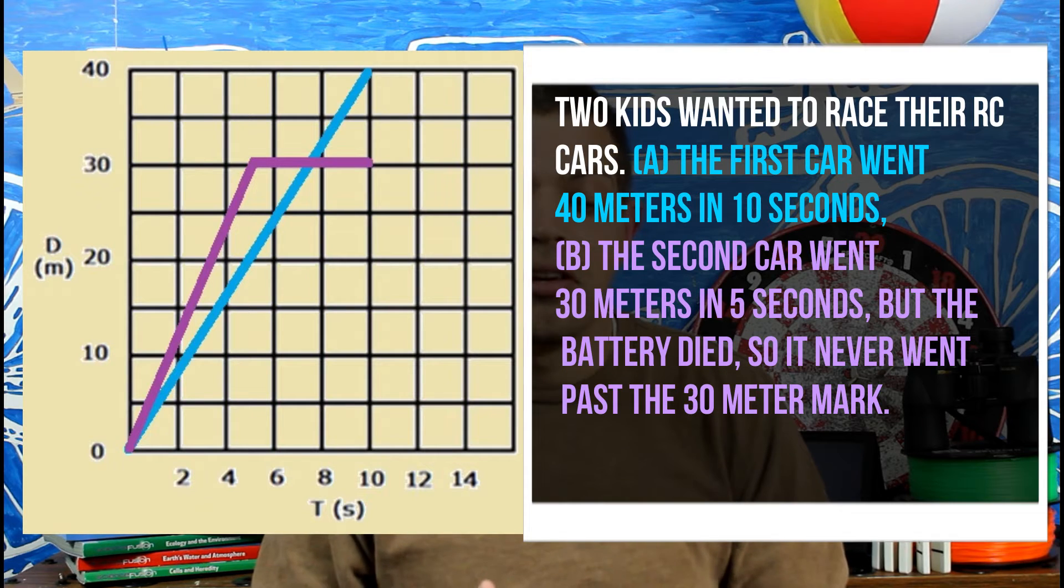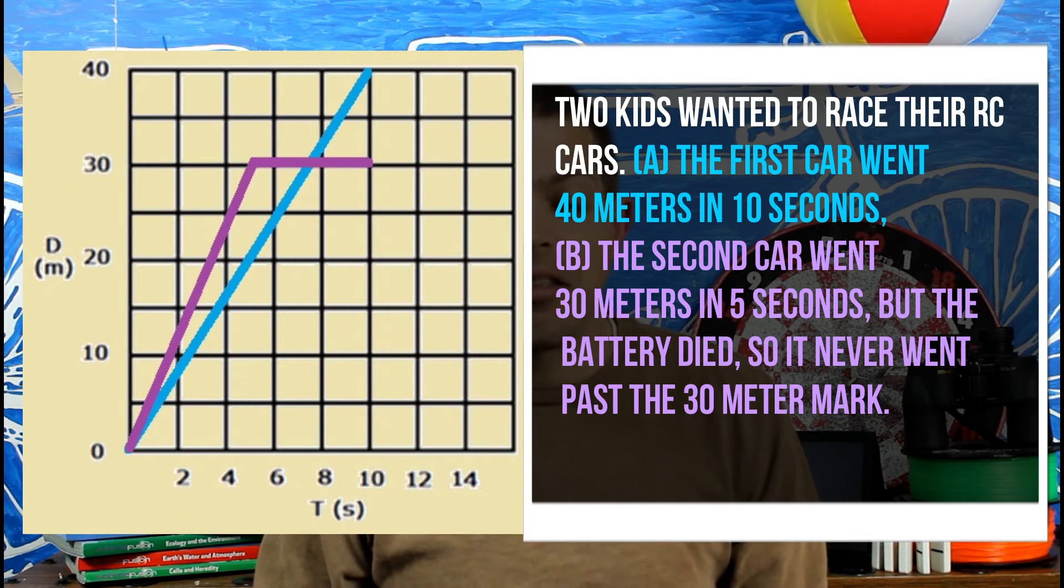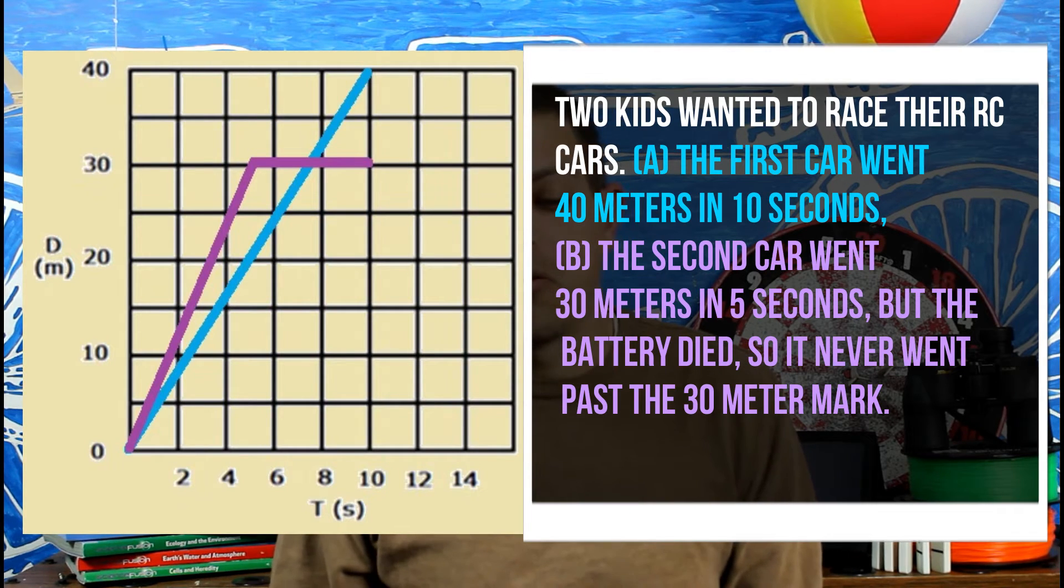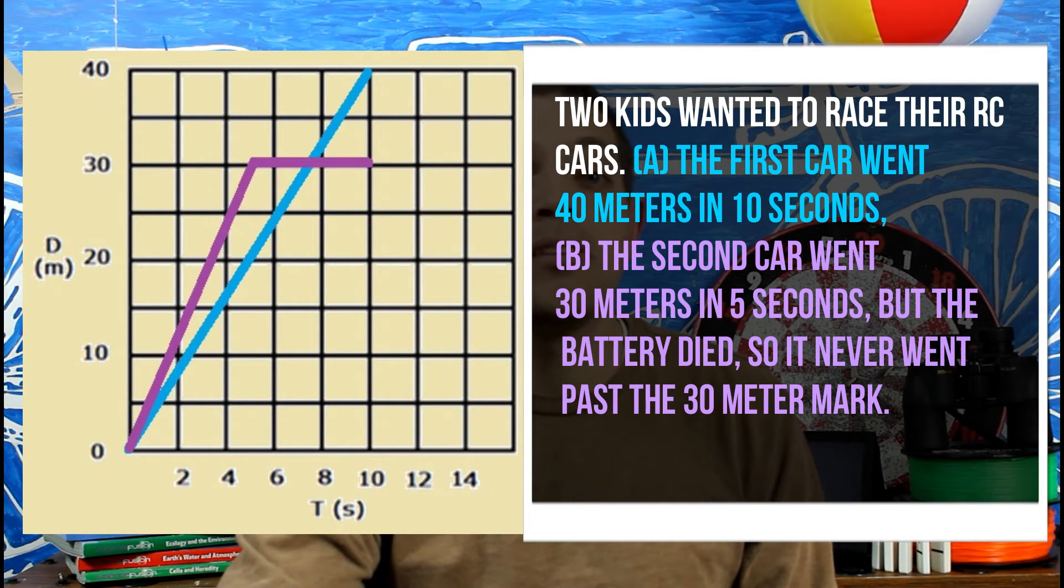Then what happens? The battery dies. So what we do is it just kind of flatlines. We have a horizontal line at the 30 mark. And we can actually add an arrow there if we wanted to, if the time continued. For the most part, we're probably just going to go to 10 seconds because that's where we know that car A went. But in reality, he could still be sitting there.